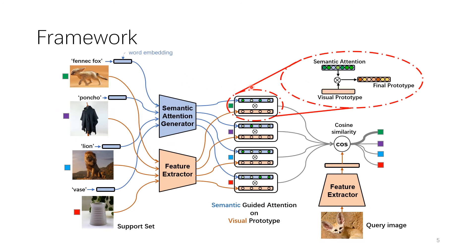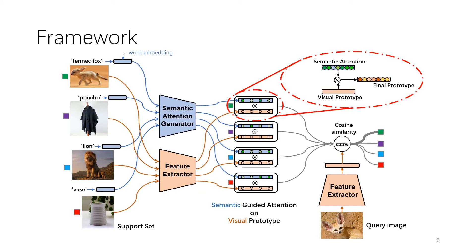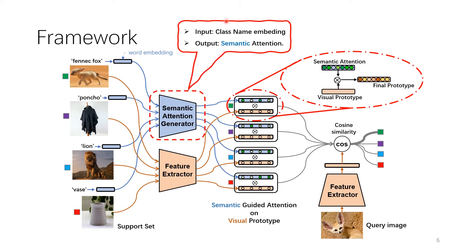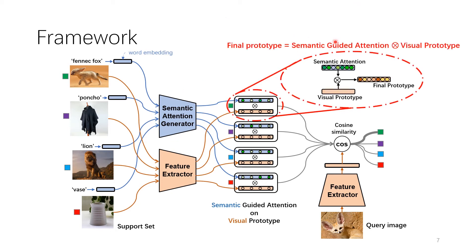Following the above motivation, our idea is quite simple: generate semantic attention from the class name and then apply this semantic attention to enhance the visual prototype. Concretely, one important submodule in our framework is the feature extractor, which takes the image as input and outputs the visual prototype. The second is the semantic attention generator, which takes the word embedding of the class name as input and outputs the semantic attention. Given the visual prototype and the semantic attention, we calculate the Hadamard product as the final prototype. The last submodule is the cosine classifier, which classifies the query image by cosine similarity.